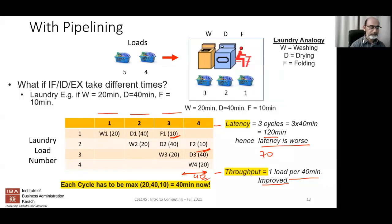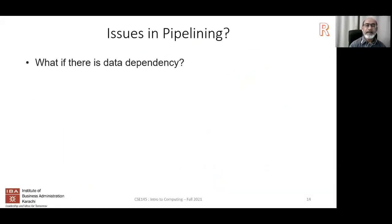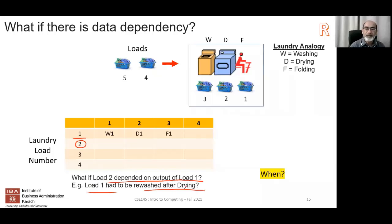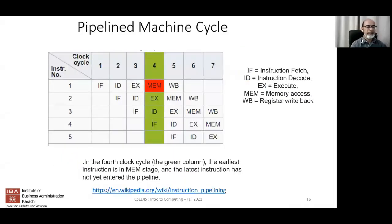The second issue is data dependency. In the laundry analogy: what if the second load depends on the output of the first? For example, if load one had to be re-washed after drying. In a real pipeline with five stages — instruction fetch, decode, execute, memory access, and write-back (WB) — suppose the instruction r1 = r2 + r3 is followed by another instruction that uses r1.